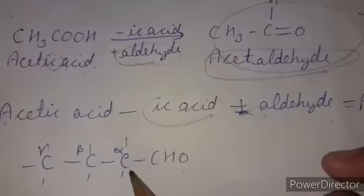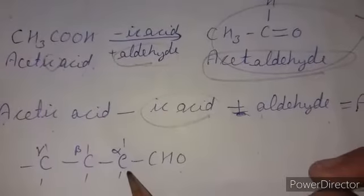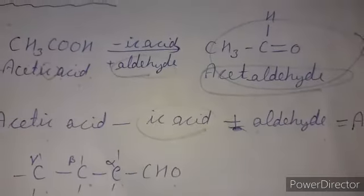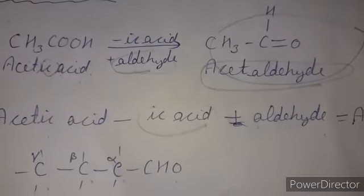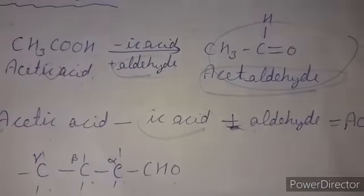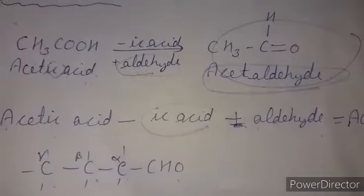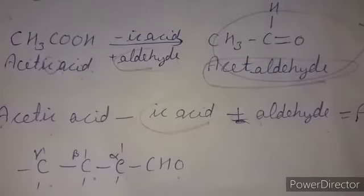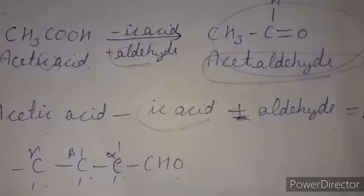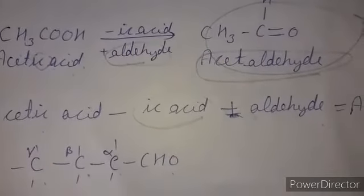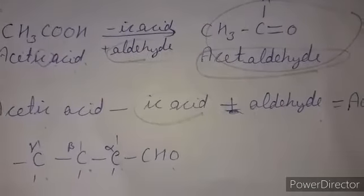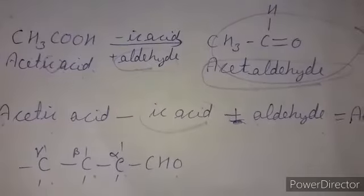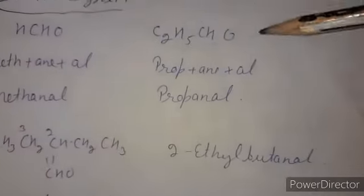The carbon attached to the functional group is called the alpha carbon, the next one is beta, then gamma, then delta. In the case of aldehydes, the next carbon is alpha. But in ketones, there are two alpha carbons present because ketone is a non-terminal functional group.